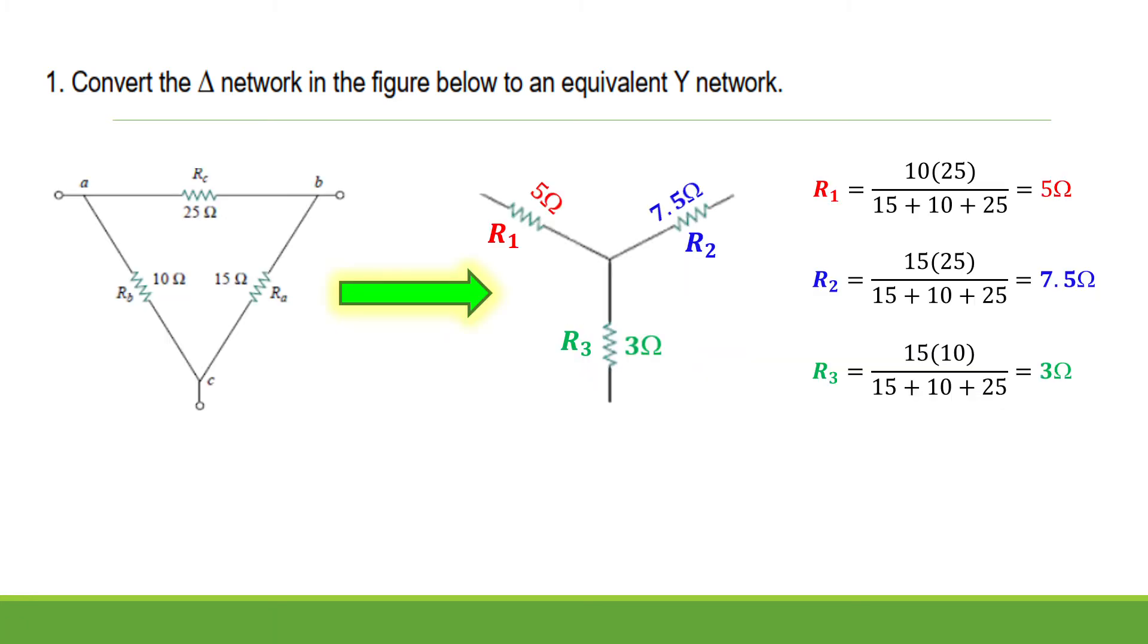So from Delta, it will become Y, with R sub 1, R sub 2, and R sub 3 having values of 5 Ohms, 7.5 Ohms, and 3 Ohms, respectively.